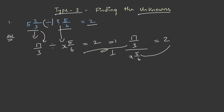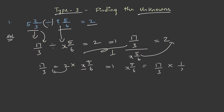Let us transfer this here. 17 by 3 is equal to 2 into x 5 by 6. We need to find the value of x. So let us bring this here: x 5 by 6 is equal to 17 by 3 into 1 by 2, which is equal to 17 by 6.